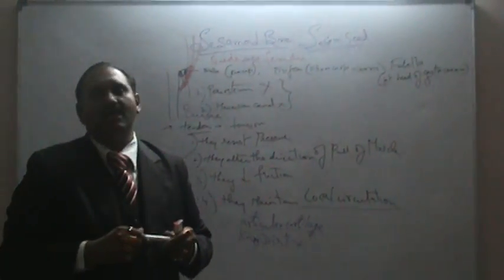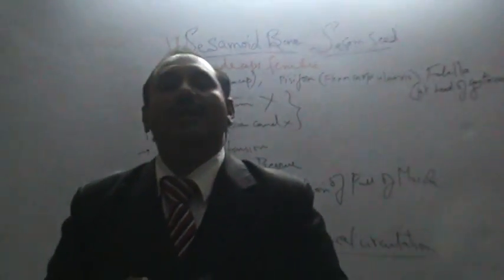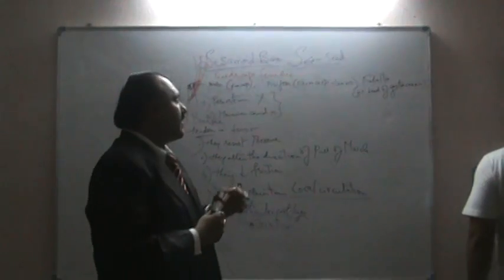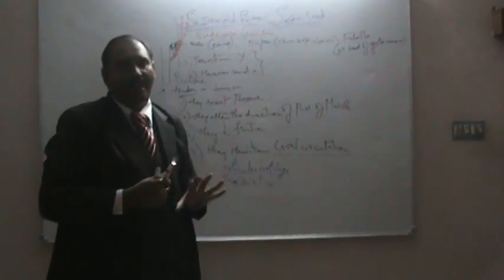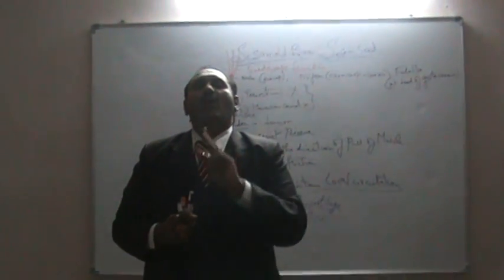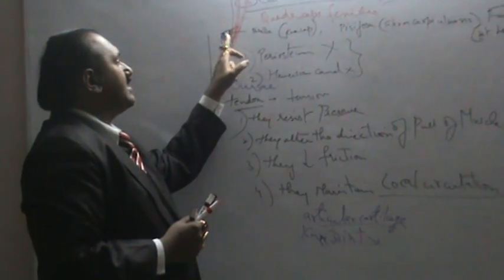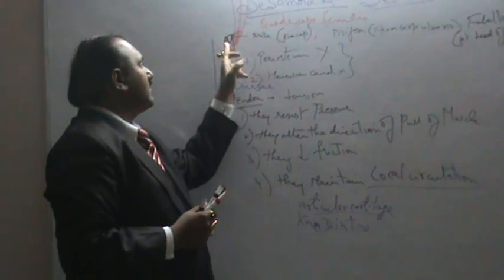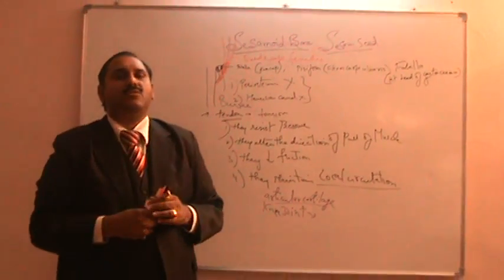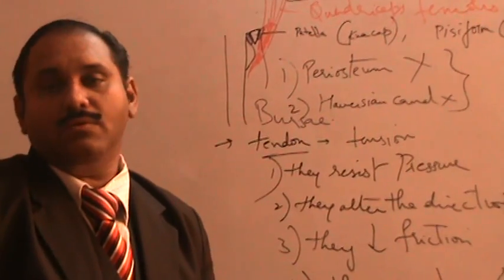The knee joint has got the maximum number of bursae — there are different types: prepatellar bursa, suprapatellar bursa, and infrapatellar bursa. These bursae are lined by a simple synovial membrane, or there is an intervening bursa between the sesamoid bone and the tendon or between the sesamoid bone and the articulating bone. So this is in short about the sesamoid bone. Thank you.